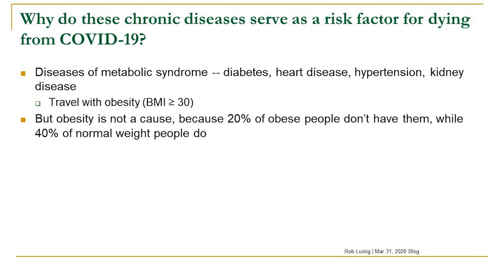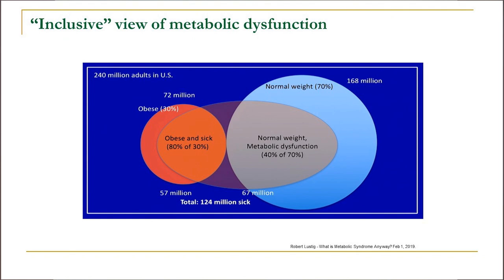Being overweight is not the cause, as Rob Lustig likes to point out, because 20% of overweight people don't have the metabolic syndrome. At this point in time, 40% of people who are normal weight to just overweight — BMIs of 18.5 up to about 29.9 — have metabolic dysfunction. He presents data on 240 million adults showing that when you include those with normal to slightly overweight BMIs who have metabolic dysfunction, there are actually more people in that category, about 67 million.